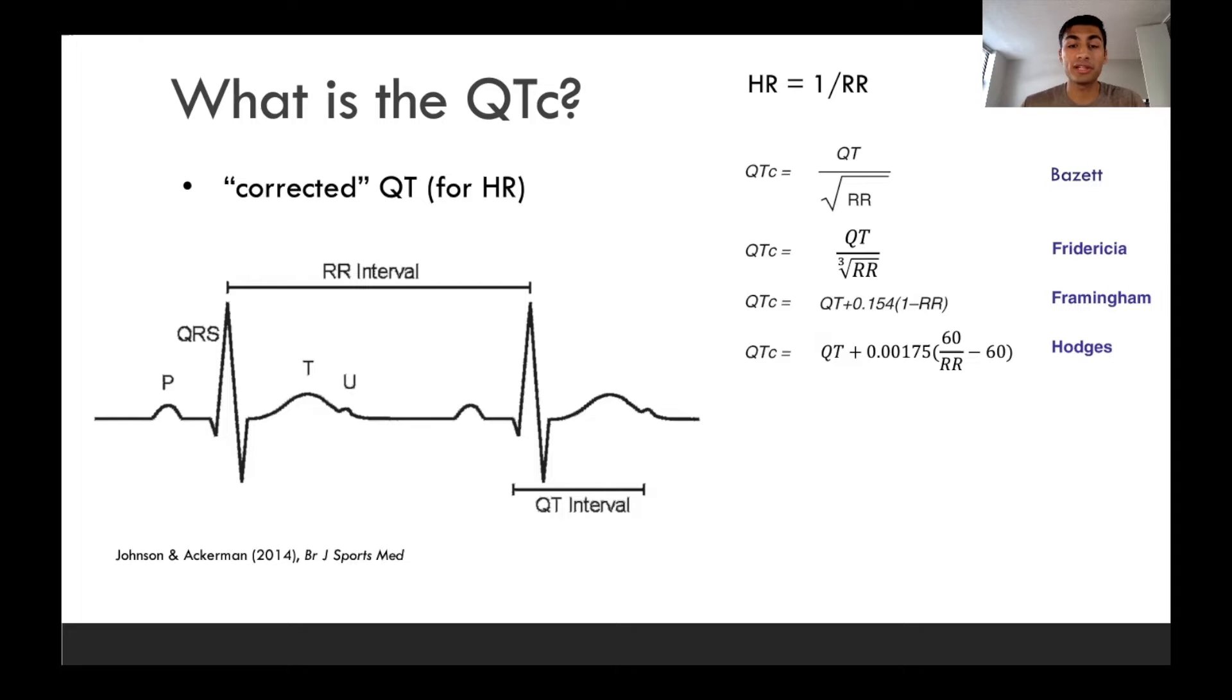So we have to do some calculations to essentially normalize the QT interval for the heart rate. One of the main parameters that we use to do this is the R-R interval. And so the R-R interval is the distance between consecutive R waves, which is essentially one cardiac cycle. There are different methods to do this. These are some of the formulas on the right. So the most commonly used formula is this so-called Bazit formula. And this is calculated simply by the QT interval over the square root of the R-R interval. So this is sort of the simplest calculation, most straightforward, and most commonly used.